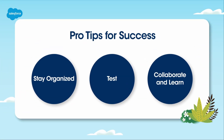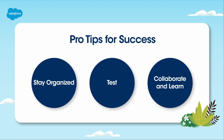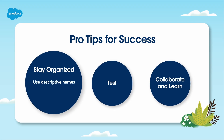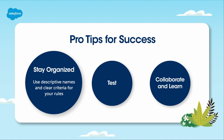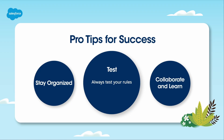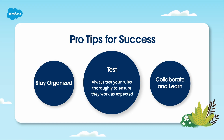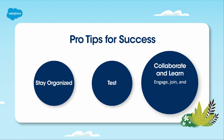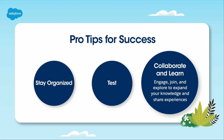Here are some tips for success. Pro tip one: stay organized — use descriptive names and clear criteria for your rules to make managing and troubleshooting them easier. Pro tip two: always test your rules thoroughly to ensure they work as expected and catch any issues before they impact your quotes. Pro tip three: collaborate and learn — engage with the Salesforce community, join forums, and explore Salesforce Trailhead to expand your knowledge.